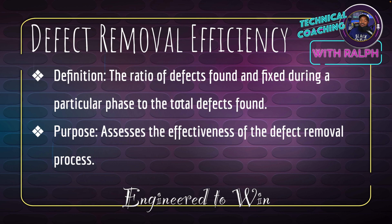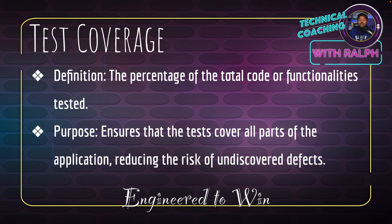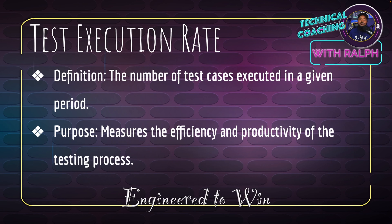Test coverage is the total code or functionalities tested. You can monitor it using test coverage tools for unit tests and even API coverage. The purpose is to ensure tests cover all parts of the application, reducing the risk of undiscovered defects — so that when you make a change without unit tests, you don't end up with unexpected failures.